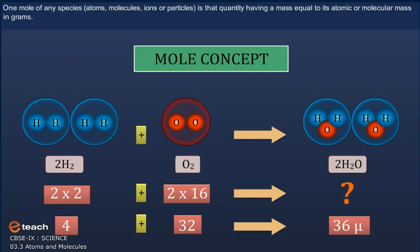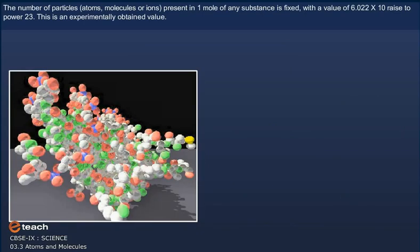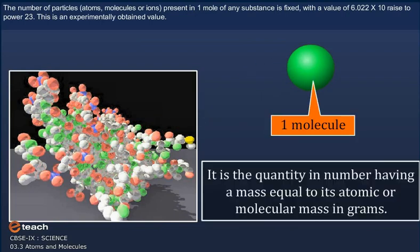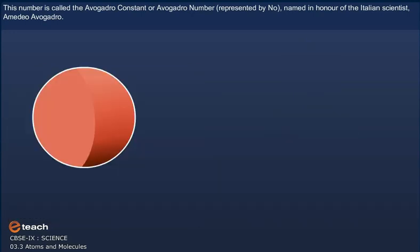One mole of any species — like atoms, molecules, ions or particles — is that quantity in number having a mass equal to its atomic or molecular mass in grams. The number of particles, atoms, molecules or ions present in 1 mole of any substance is fixed with a value of 6.022×10²³. This is an experimentally obtained value called the Avogadro constant or Avogadro number, represented by N₀, named in honour of the Italian scientist Amedeo Avogadro.